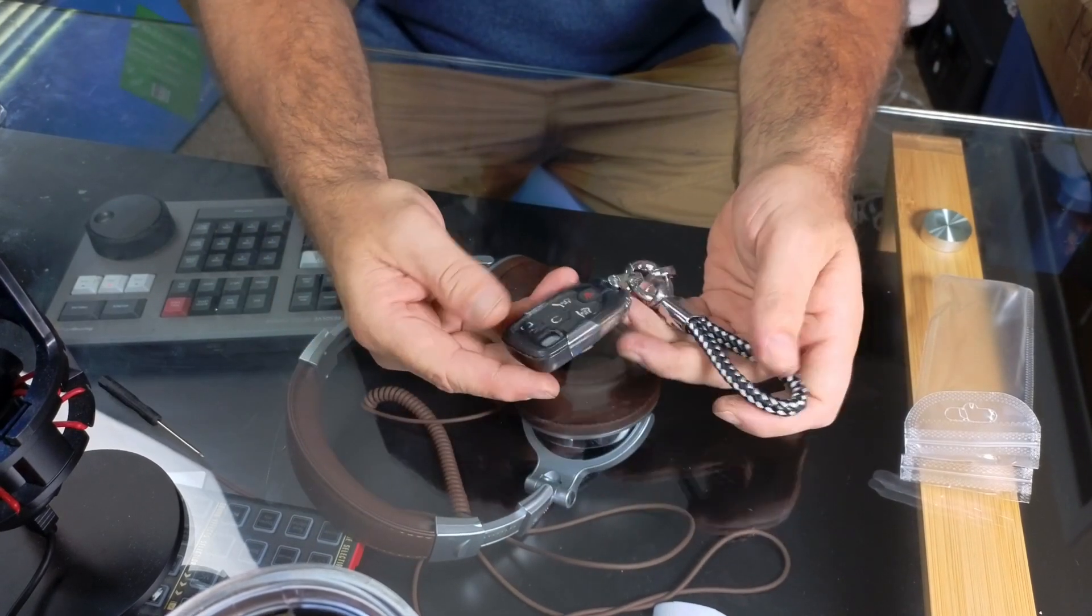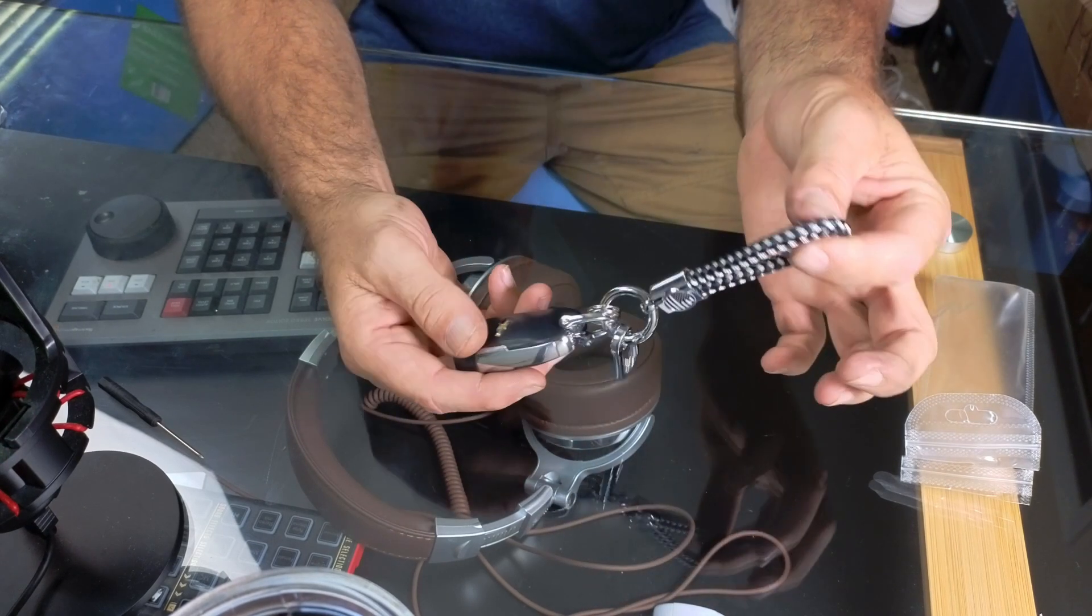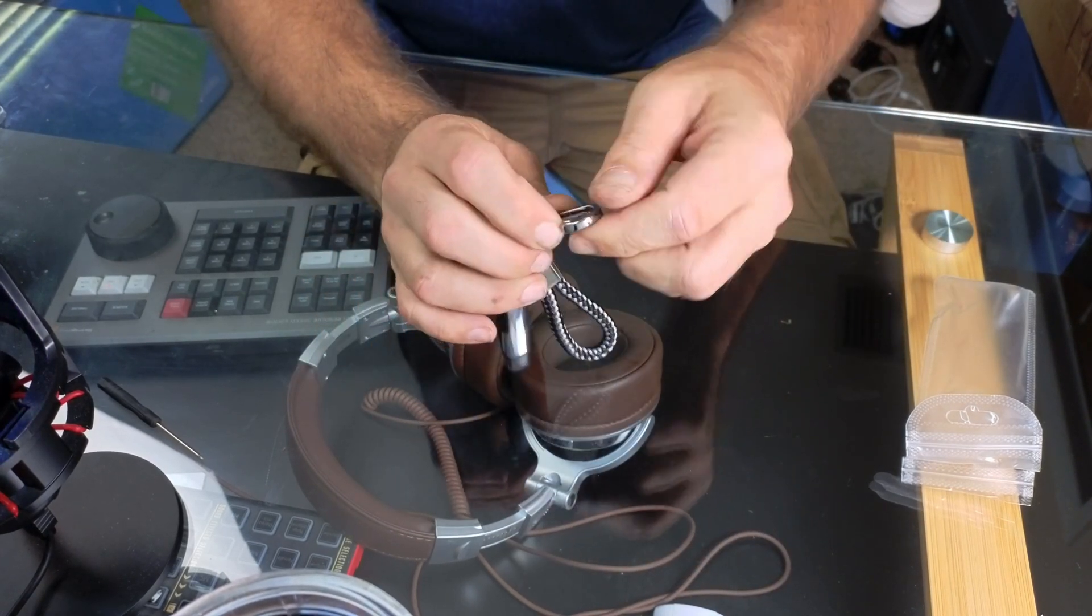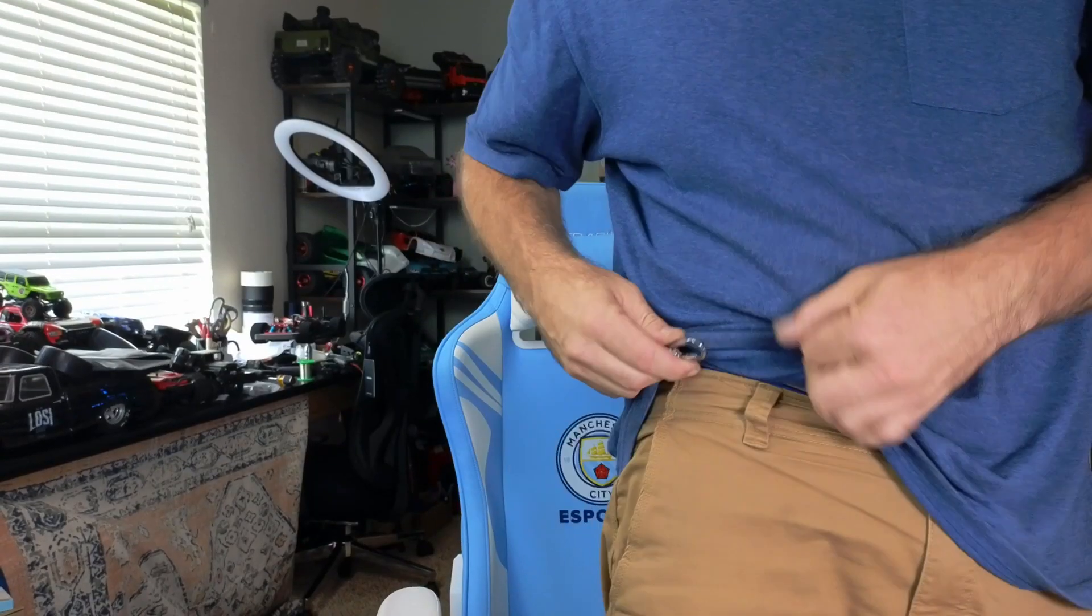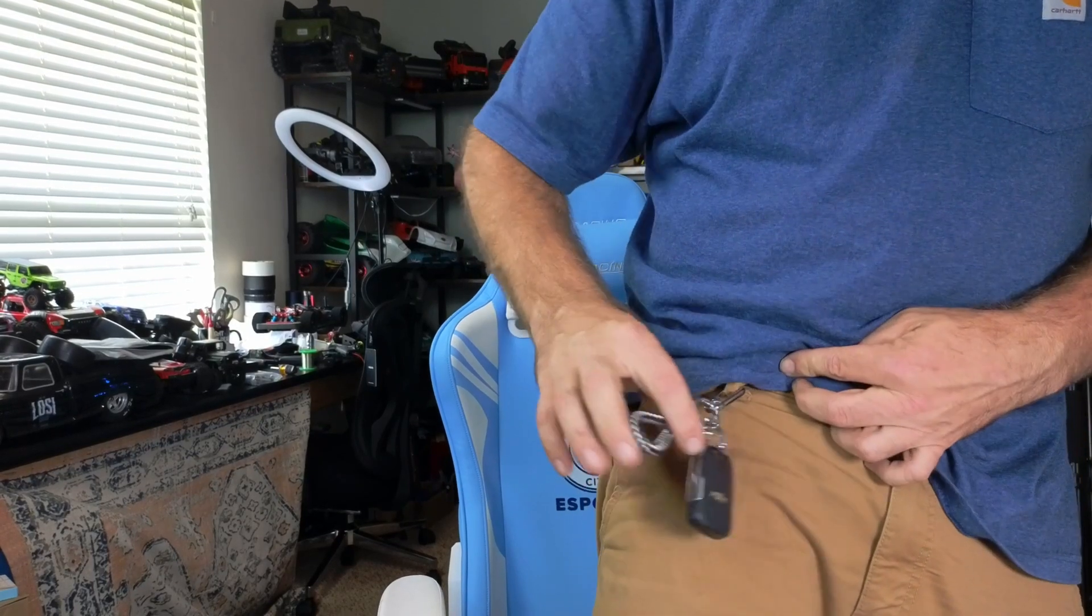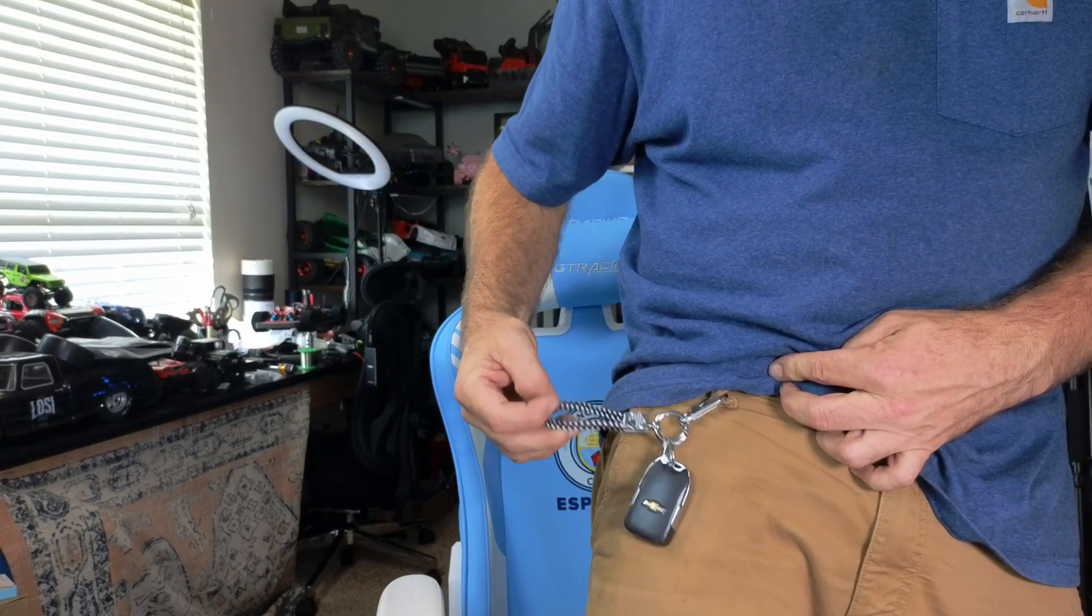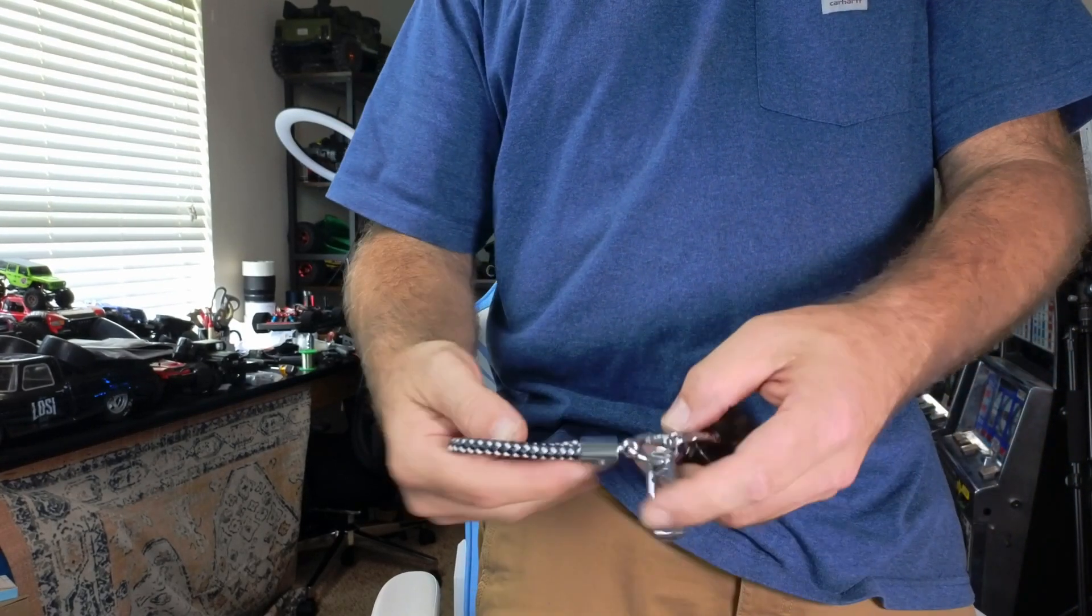I went ahead and put our key fob on there. You can see how it hangs on there nice and compact. Like I said, you can just take this and clip it on your belt. You can just clip it onto the ring if you want to. It's going to hold your keys, keep your stuff organized, and it's just a nice accessory to have.